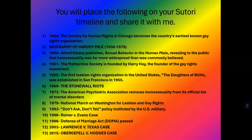The first item is 1924: the Society for Human Rights in Chicago becomes the country's earliest known gay rights organization. The majority of people — not just people your age, but adults too — think the gay rights movement began in the 1960s. It actually started in 1924, which is probably new information to most.